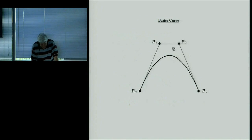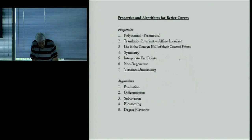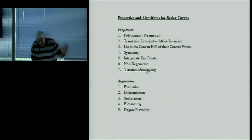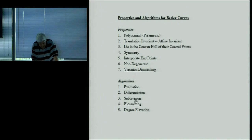Here we see the curve and the control points connected by straight lines — called the control polygon — which controls the shape of the curve. When you move the points, the curve moves along with it. Bézier curves have many nice properties, including the variation diminishing property: a theorem says the curves won't oscillate more than the data, unlike Lagrange interpolation.